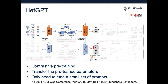Here's an overview of the HGPT model. It first uses the contrastive-based pre-training method to maximize the similarity between the node embeddings and its positive samples and minimize those with the negative samples. Then, it transfers the pre-trained parameters to the fine-tuning stage. In this way, we only need to tune a small set of prompts.